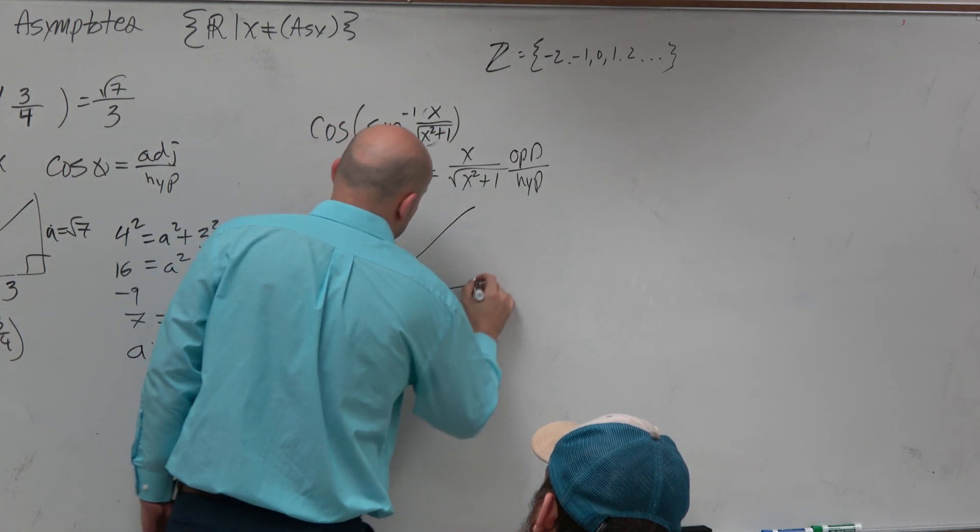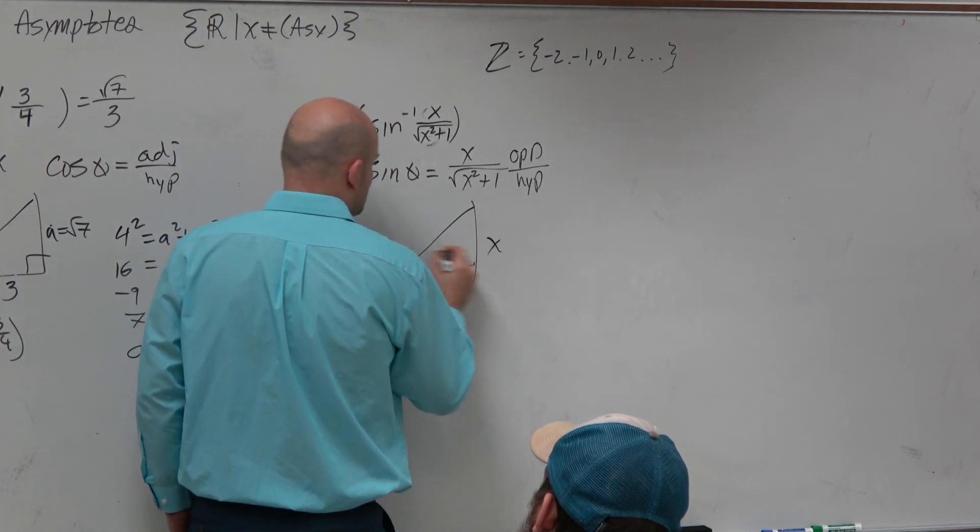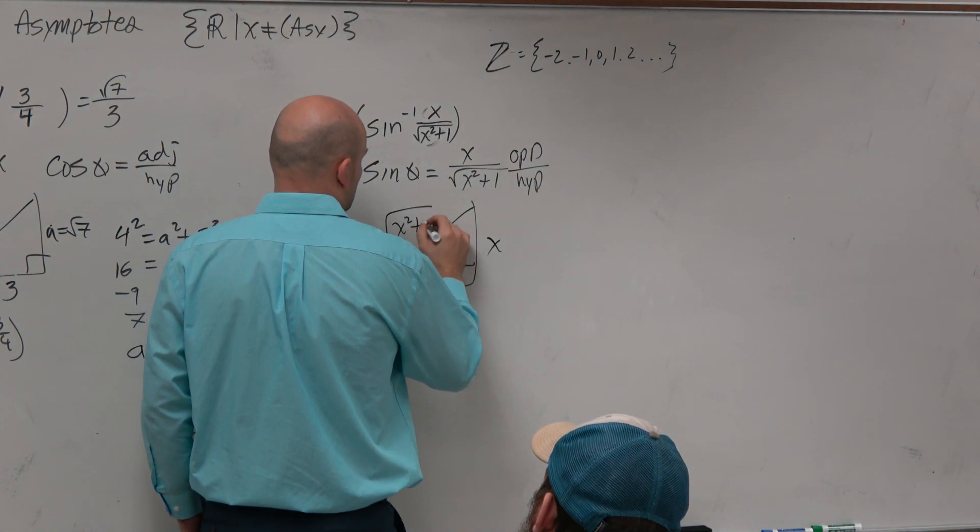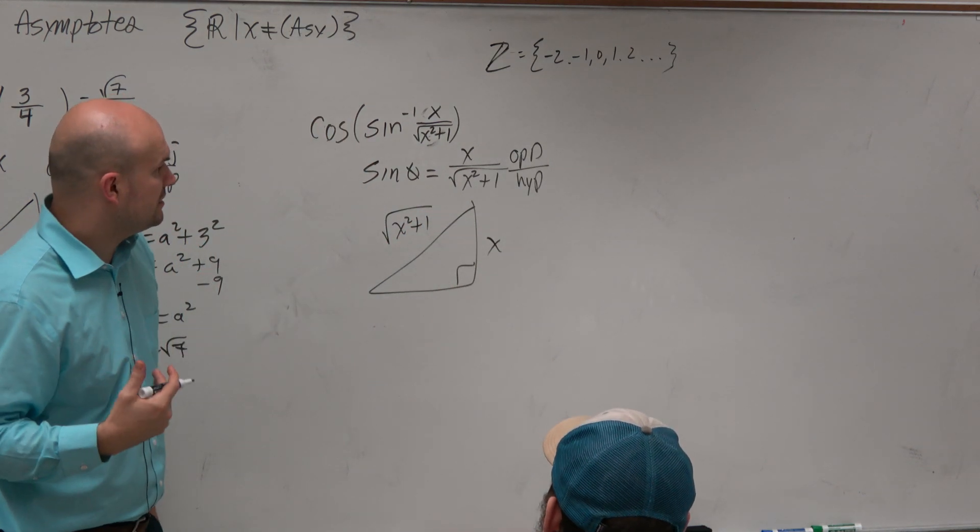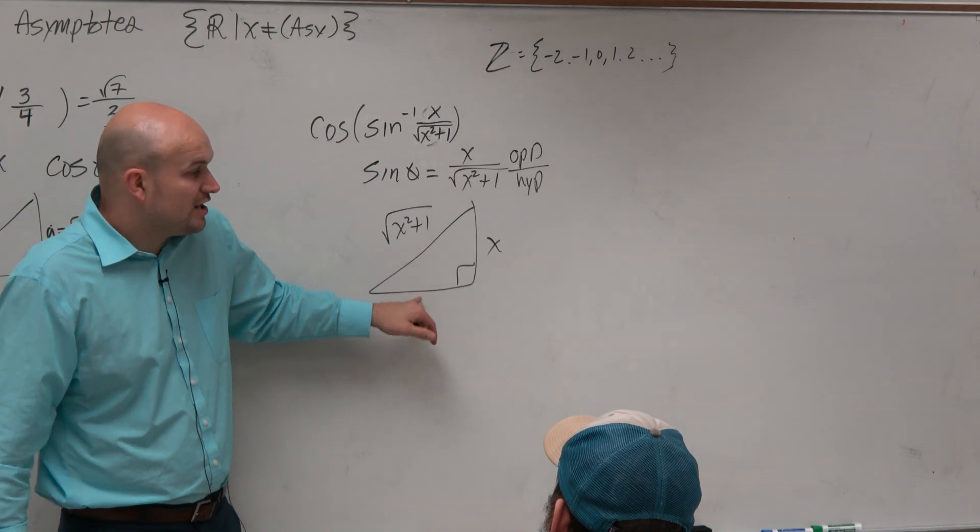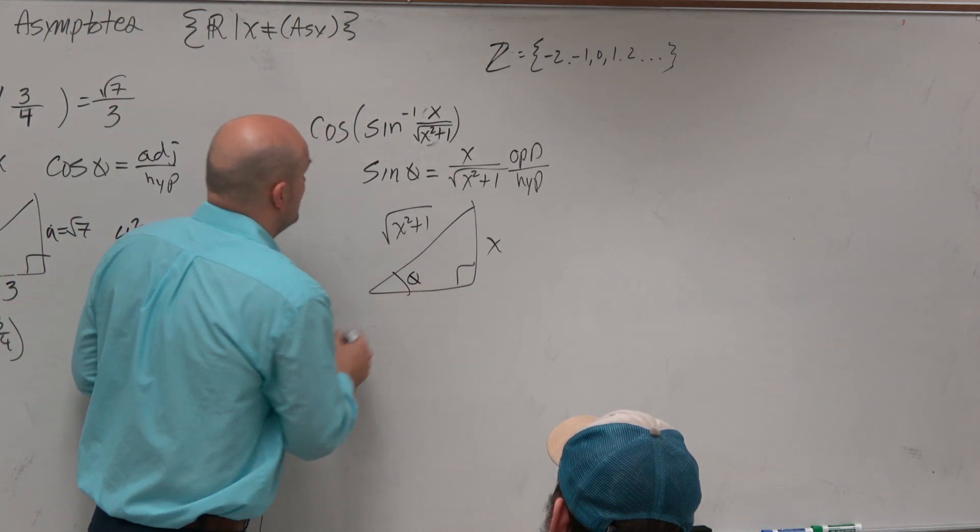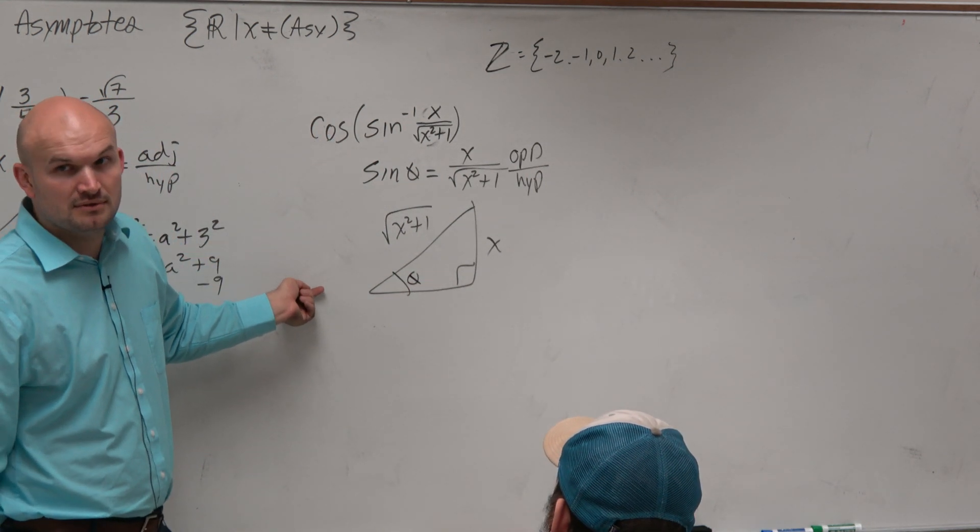So let's draw our triangle. Opposite over hypotenuse. And now, can we figure out what this side is so we could take the cosine? Sure.